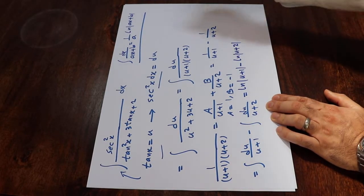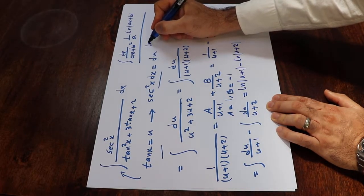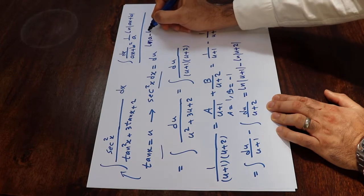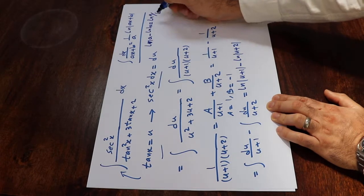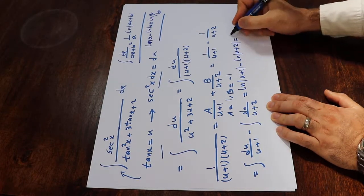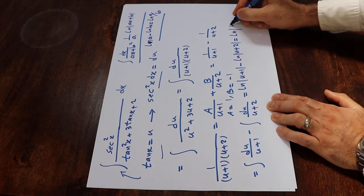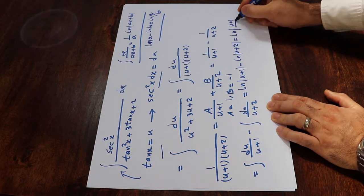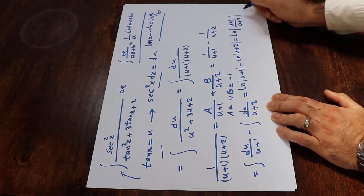And also from algebra, we know that ln a minus ln b is equal to ln a divided by b, right? So here, this is a, this is b. Therefore, you can write it as ln a divided by b. That is u plus 1 divided by u plus 2 plus c, which is the constant of the integral.